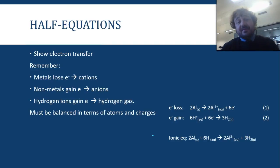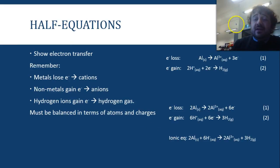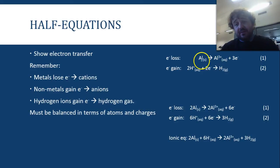So, they must be balanced in terms of atoms and charges. So, here we have, again, this is aluminium in an acid, probably hydrochloric acid. So, what we have is aluminium as a solid, it gets put in the acid, and then it gives away its electrons, three of them, to become an ion, a positive ion, three plus.